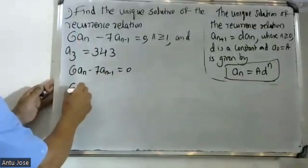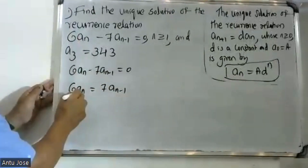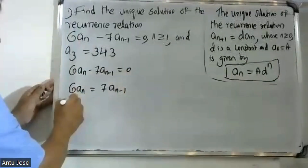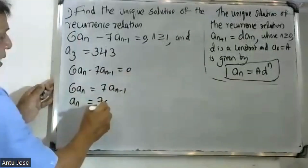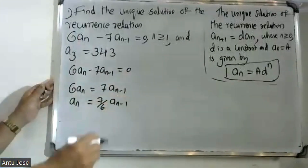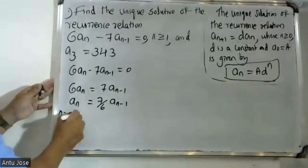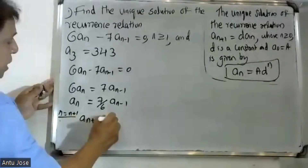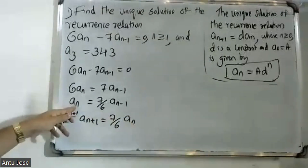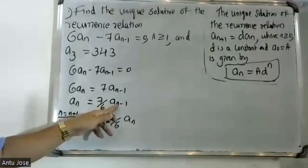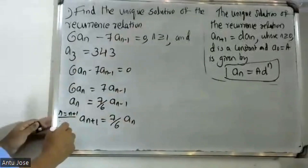So 6a equals 7a minus 1, which gives us 7 by 6a minus 6a plus 1 equals 7 by 6, and therefore 6a plus 1 is equal to 7 by 6a plus 1.